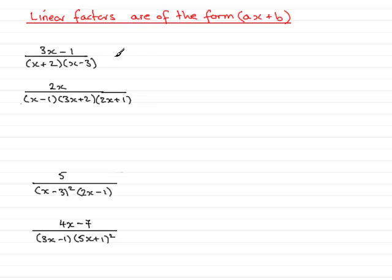Now, whenever you have linear factors like this, ax plus b, they always give rise to a constant over the ax plus b. So in other words, our first linear factor is x plus 2. So this will end up giving us a partial fraction of the form of a constant, which I'll call A, over the linear factor x plus 2.